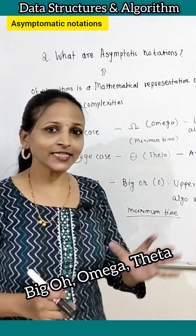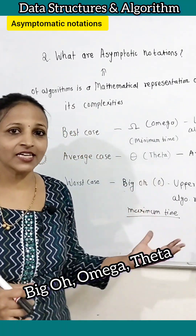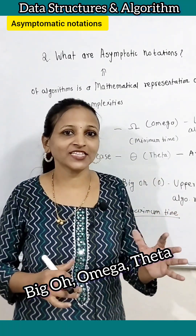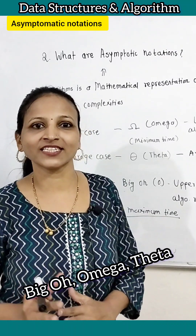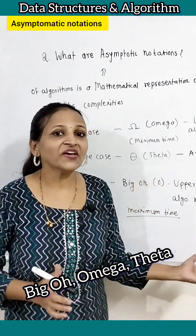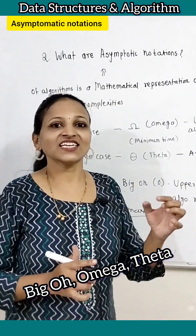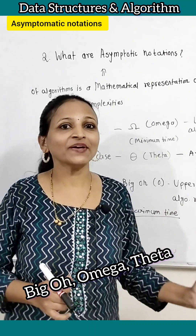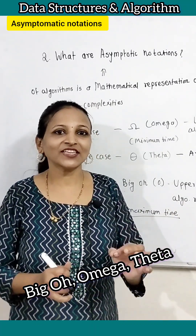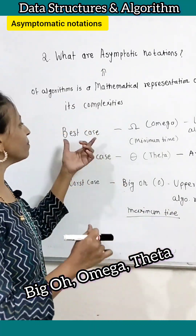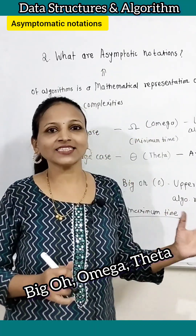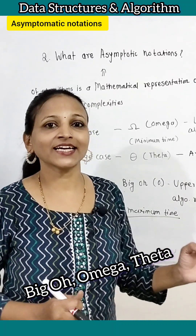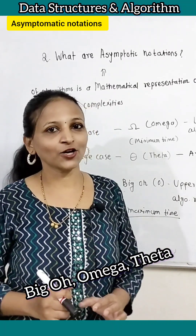There are three notations used for representing best case, average case, and worst case complexities. The best case time complexity or space complexity can be represented with the help of omega notation — that is nothing but the minimum time or space taken by an algorithm.